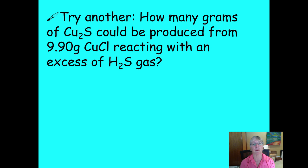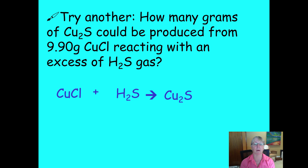Now try this problem: how many grams of copper sulfide could be produced from 9.9 grams of copper chloride? You start with a balanced equation. Copper chloride reacts with hydrogen sulfide gas in a double replacement reaction to produce copper sulfide and hydrogen chloride. This equation needs balancing: put a 2 in front of copper chloride to balance the two coppers on the right, then a 2 in front of hydrogen chloride to fix the hydrogens, which also fixes the two chlorides. That gives the balanced equation.